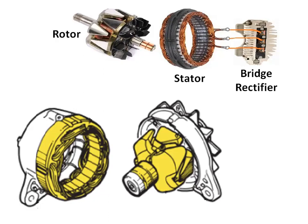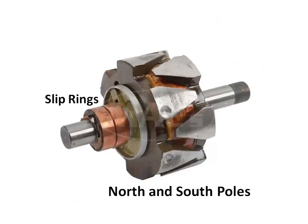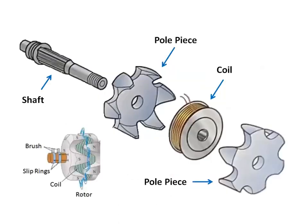A rectifier plate is mounted in the slip ring end frame. An insulated field winding is mounted on a spool that is pressed onto the rotor shaft. Two metal poles are pressed onto the rotor shaft on each side of the winding, and these poles have interlacing fingers positioned above the winding. Two insulated copper slip rings are mounted on the end of the rotor shaft, and the ends of the field winding are connected to these slip rings.